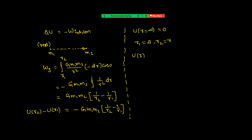U(R) minus zero equals negative of minus G·M1·M2 into (1/R minus 0). So this equals minus G·M1·M2 / R. That is the gravitational potential energy of a two-particle system. From this we can see: if separation is increasing, the numerical value decreases, but since we have a negative sign, the total value increases. So whenever separation increases, gravitational potential energy also increases.